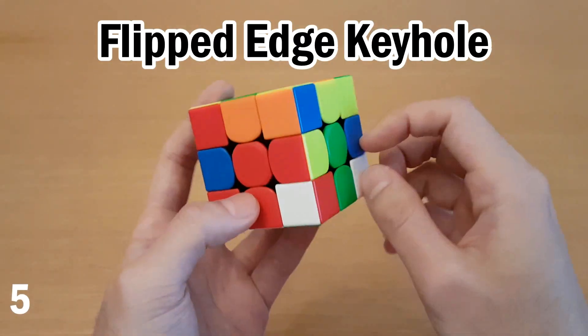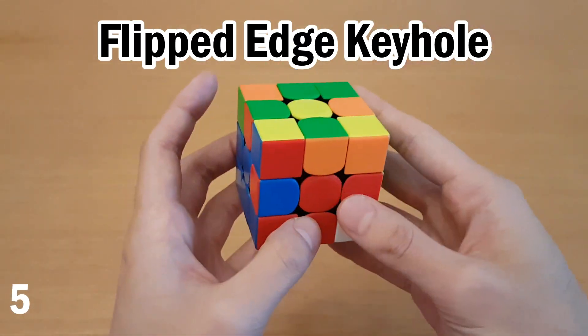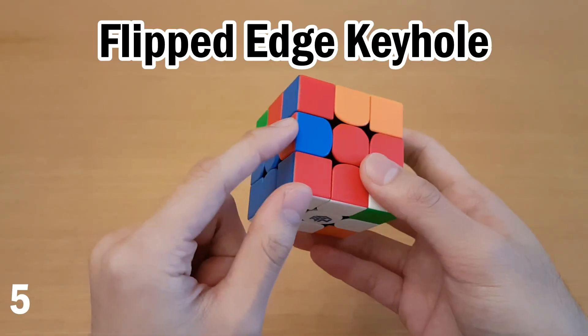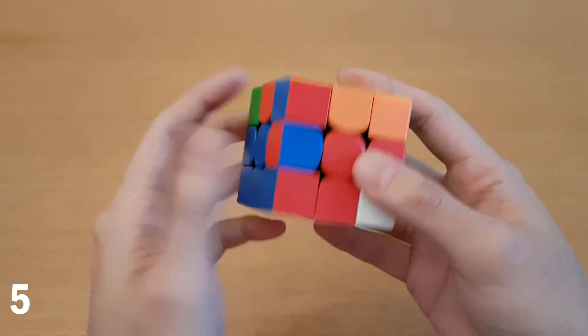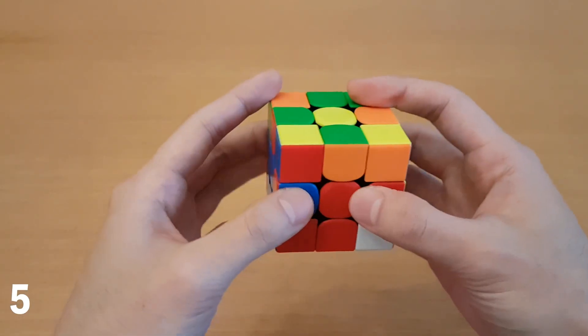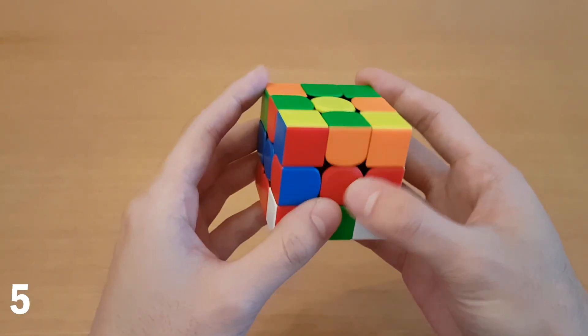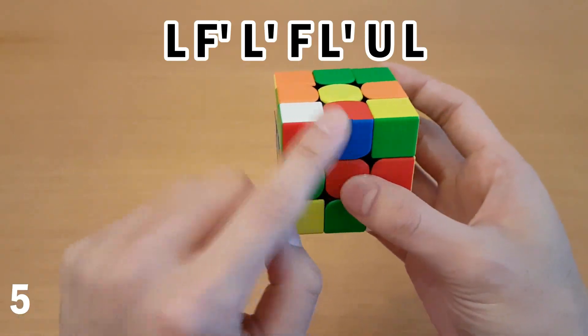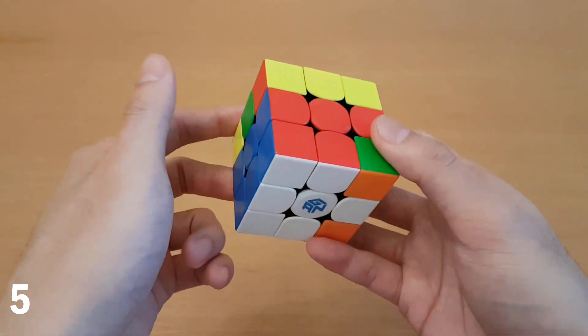But if you do get this pair, and you have other open slots, but you don't see anything so obvious yet, then what you can do is do keyhole to flip this. So what you need is any unsolved corner beneath this edge, such as this, and then just do a flipping algorithm for this. So that can be with sledgehammer, and then reinsert the edge, and then undo that D move.